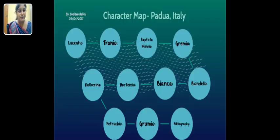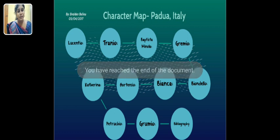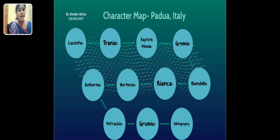A characters map is provided in the slide. The characters in the play are Lucentio, Tranio, Baptista Minola, Gremio, Biondello, Bianca, Hortensio, Katherine, and Petruchio, among others. The overall concept of the play is how Katherine has been changed into a controlled wife. I hope you all understand — thank you so much.